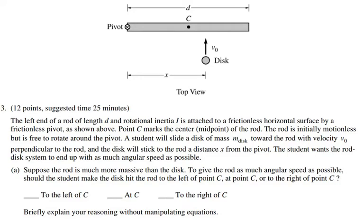This question is from the 2017 AP Physics 1A exam. The left end of a rod of length D and rotational inertia I is attached to a frictionless horizontal surface by a frictionless pivot, as shown in the picture. Point C marks the center midpoint of the rod. The rod is initially motionless but free to rotate around the pivot. A student slides a disk of mass m-disk toward the rod with velocity v-sub-zero perpendicular to the rod, and the disk sticks to the rod at distance x from the pivot.